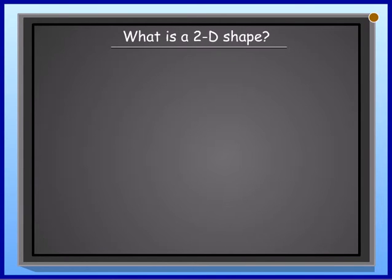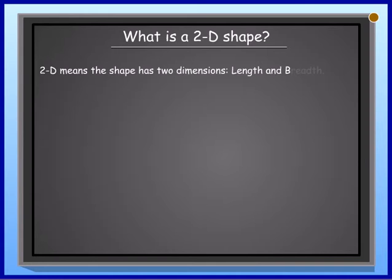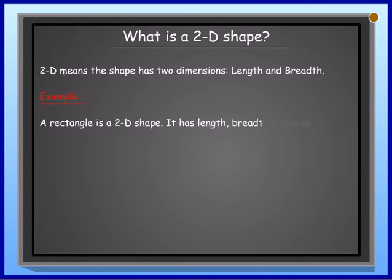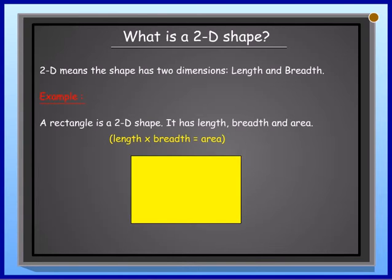What is a 2D shape? 2D means the shape has two dimensions: length and breadth. Example: A rectangle is a 2D shape. It has length, breadth and area. Length multiplied by breadth equals area.